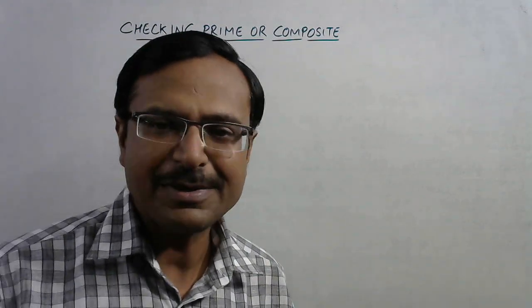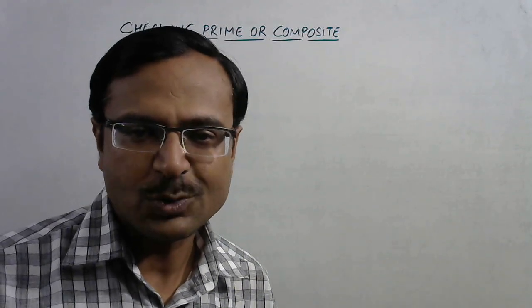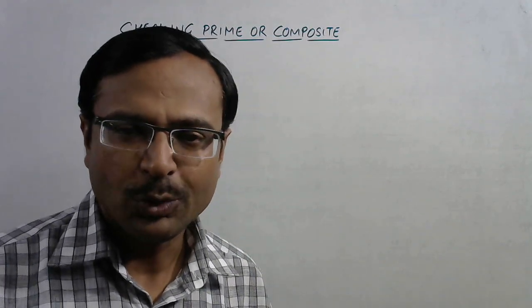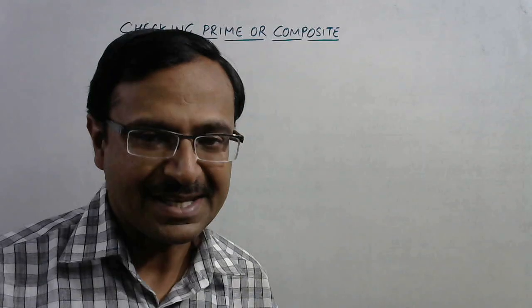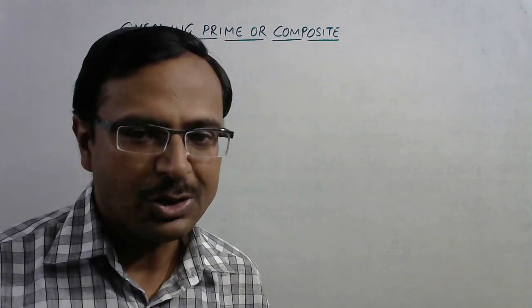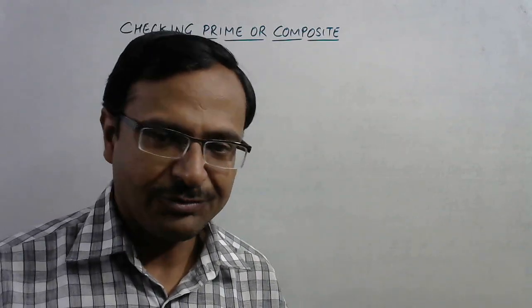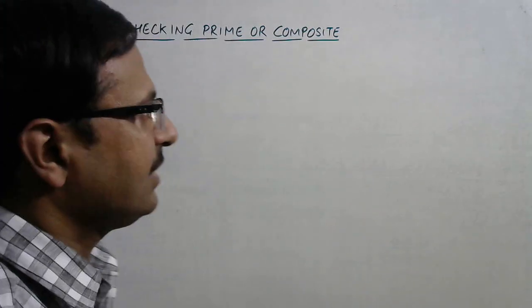So I'm going to take some examples and tell you the method first, and then we can practice using some large numbers up to say 1000. Yes, up to 1000, any number you can check whether it is prime or composite using this amazing method which I am going to tell you in this video.